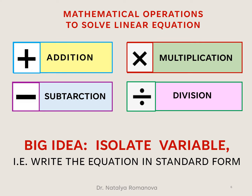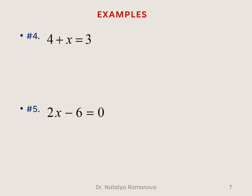The previous slides showed solving linear equations in standard form. To write any linear equation in standard form, we use the four basic mathematical operations: addition, subtraction, multiplication, and division. The big idea: to solve any linear equation, we must isolate the variable using basic math operations. For example, 4 plus x equals 3 — our goal is to isolate x. We subtract 4 from both sides, giving x equals 3 minus 4, which is negative 1.